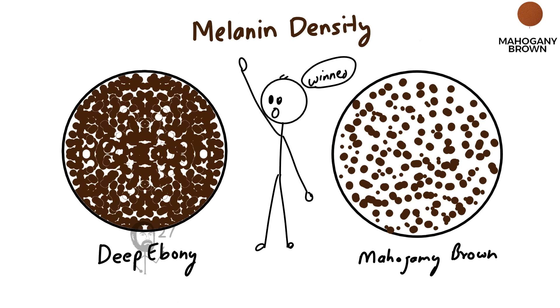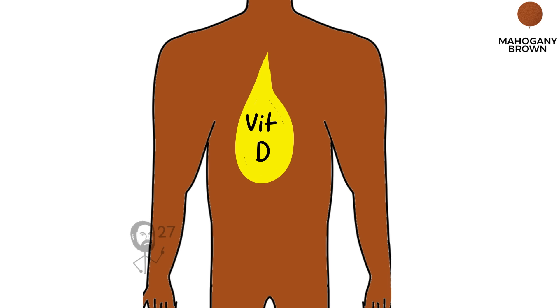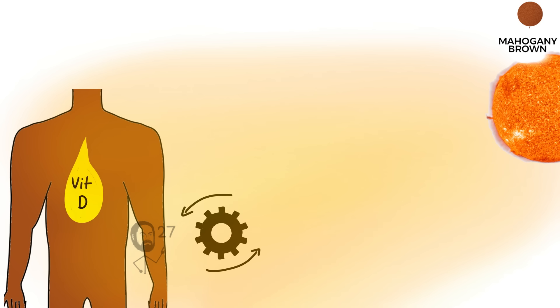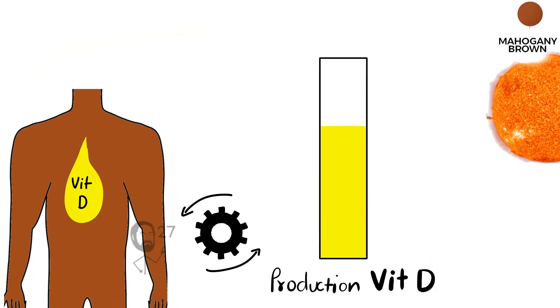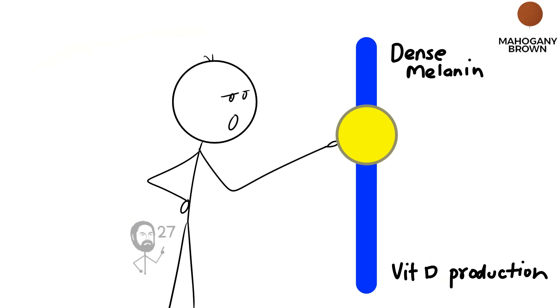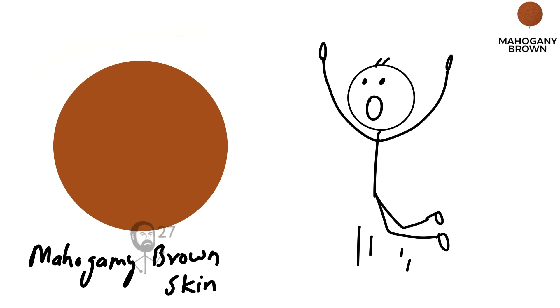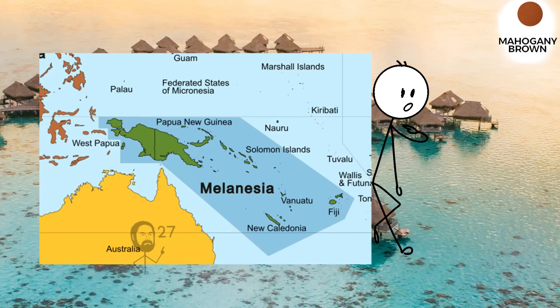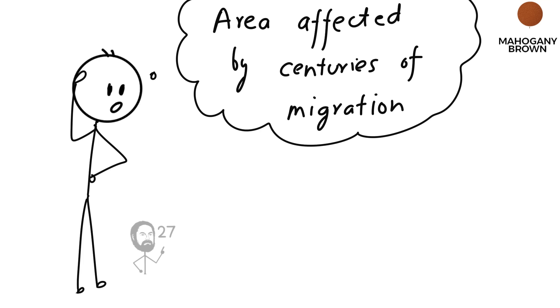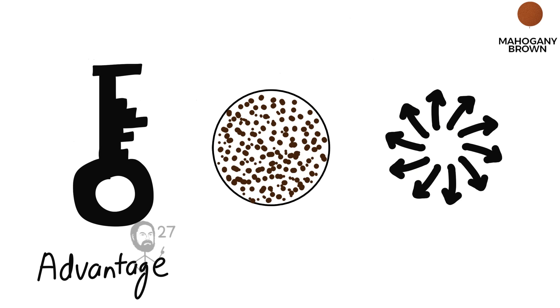At the same time, it is less dense than in the darkest tones, which makes vitamin D production more efficient when sunlight is present but not always at peak levels. This fine adjustment allowed people with mahogany brown skin to thrive in varied environments across Melanesia, parts of South Asia, and areas influenced by centuries of migration. The key advantage of this pigmentation is its versatility.